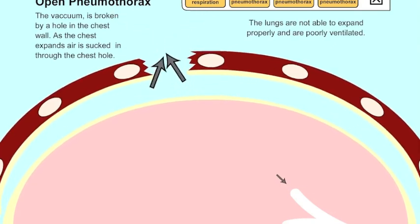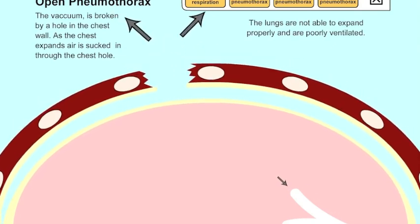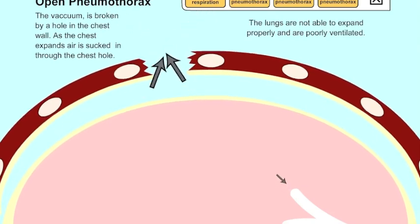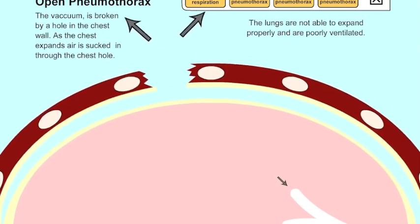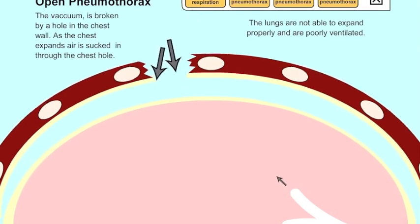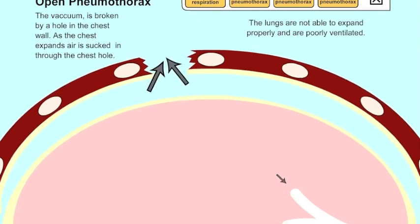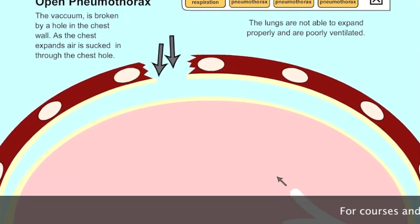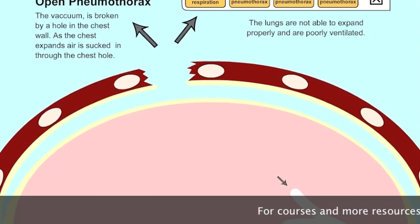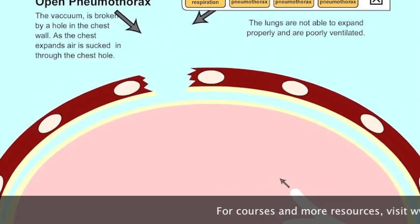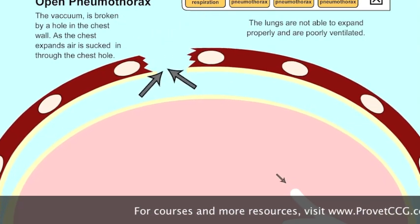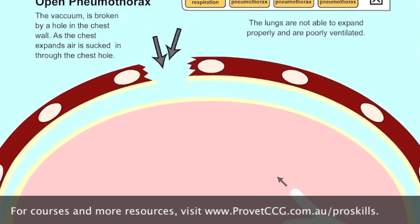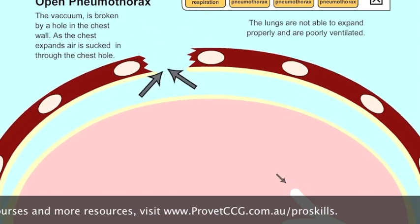An example of this might be a cat that's been attacked by a dog and the tooth has gone through the whole chest wall. So although you may see the chest rising and falling, there's no actual gaseous exchange going on. Those lungs aren't inflating and deflating because the vacuum has been broken.